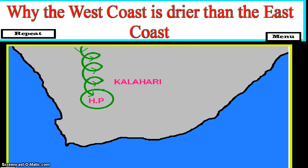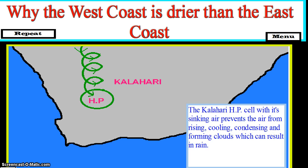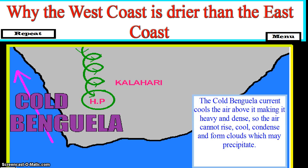While the west coast of South Africa is drier than the east coast, the Kalahari high-pressure cell with its sinking air prevents the air from rising, cooling, condensing, and forming clouds which can result in rain. The cold Benguela current cools the air above it, making it heavy and dense, so the air cannot rise, cool, condense, and form clouds.